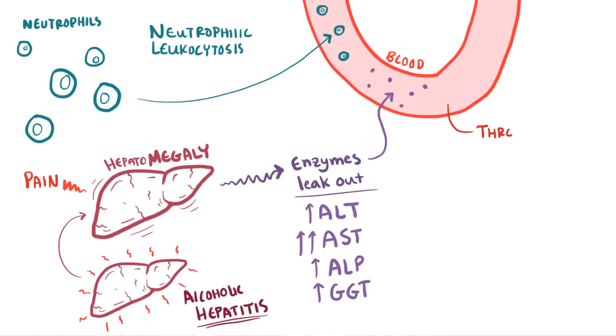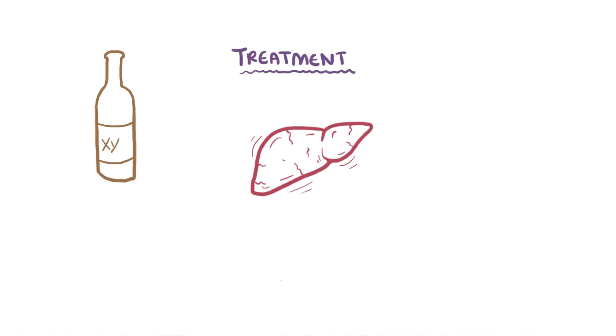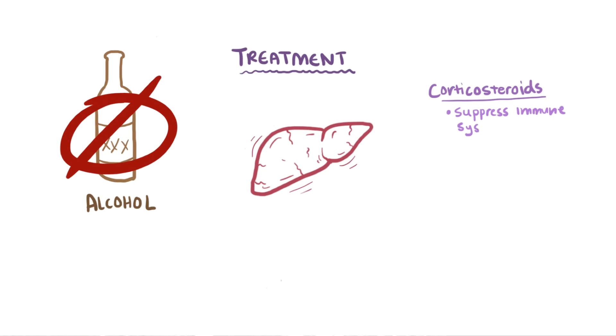In some cases, thrombocytopenia, a deficiency of platelets in the blood, as well as possible hypoglycemia, or low blood sugar, can also be found in the blood of someone with alcoholic liver disease. Treatment, again, involves completely stopping alcohol consumption, and in some cases corticosteroids can help suppress the immune system.